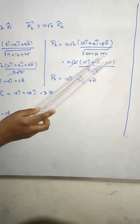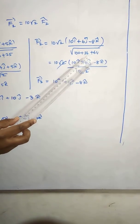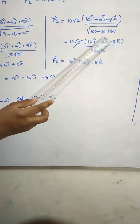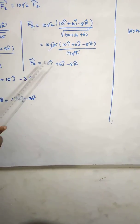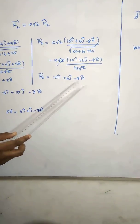100 plus 36 plus 64 varoon, 200 varoon. 200 is equal to 100 into 2, so 10√2. These two things get cancelled. F2 vector is equal to 10i plus 6j minus 8k.